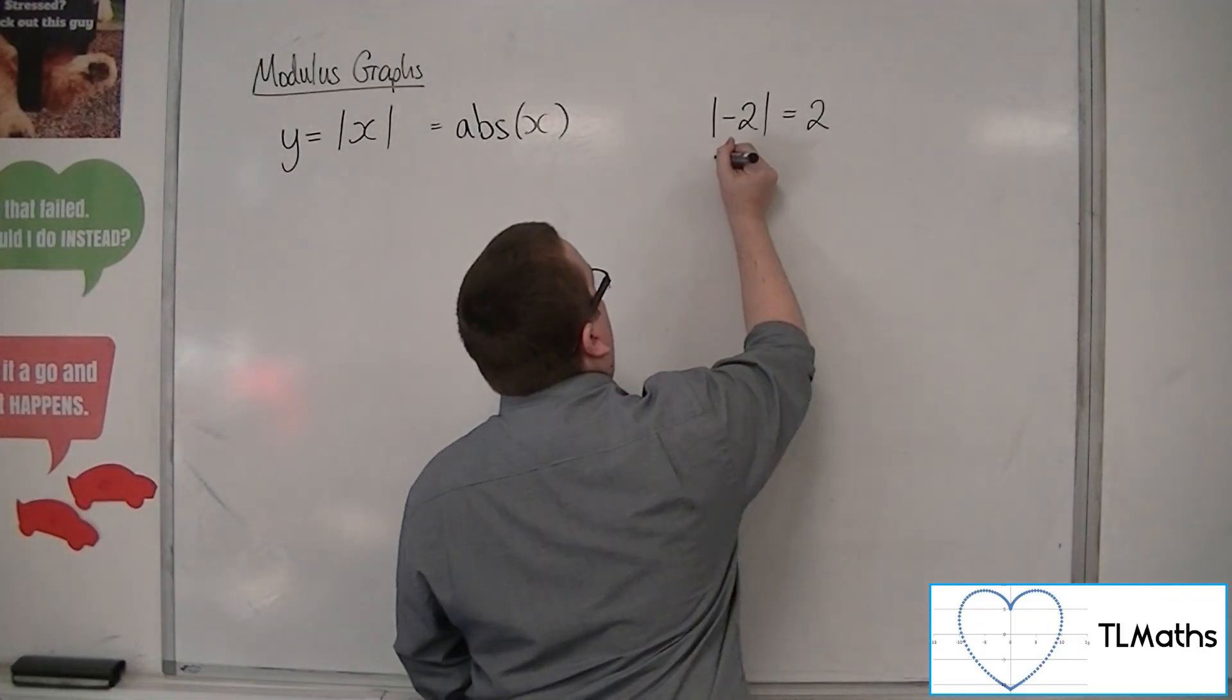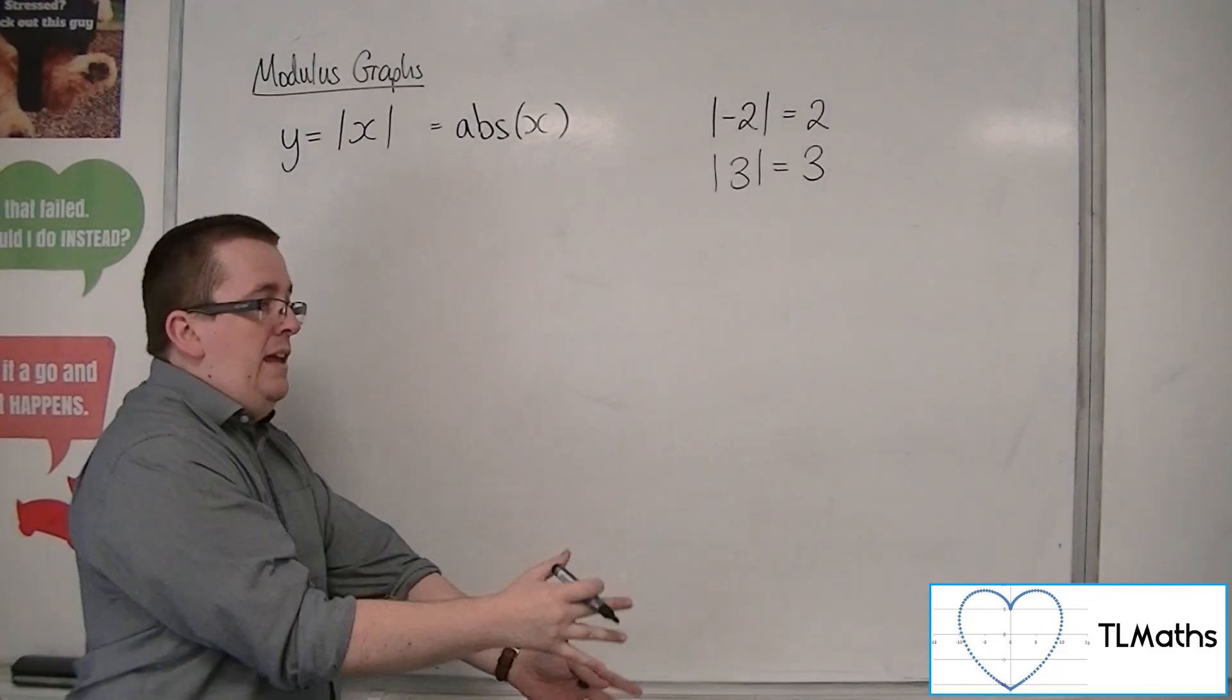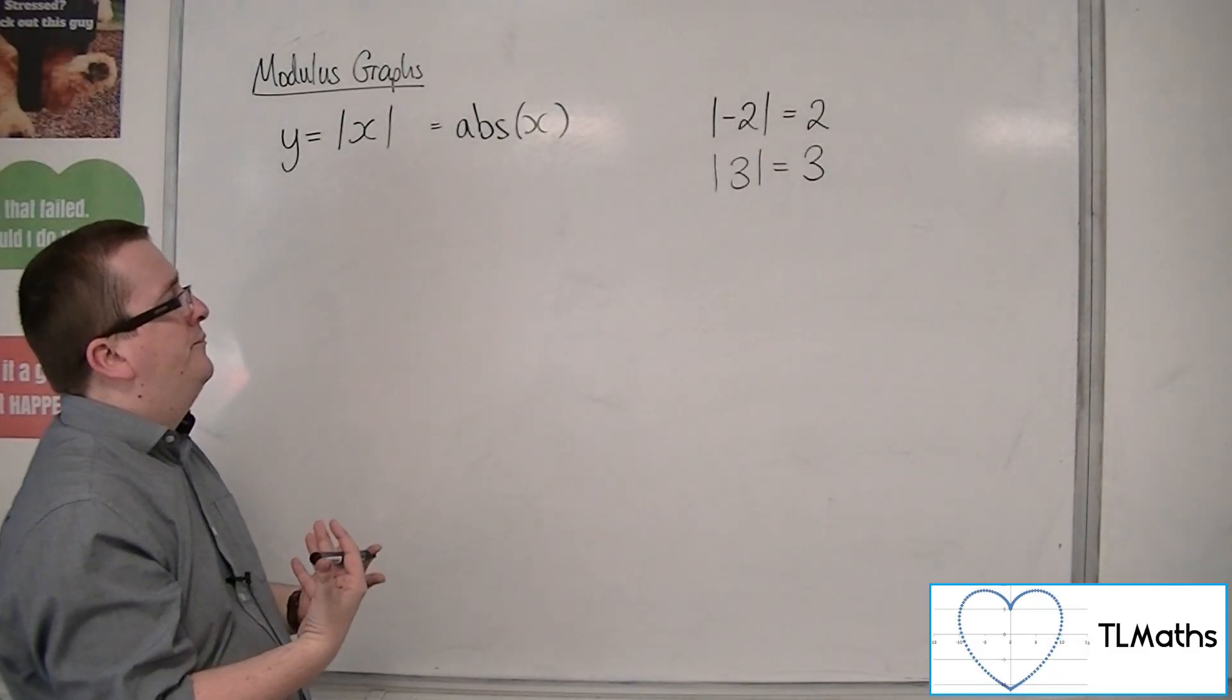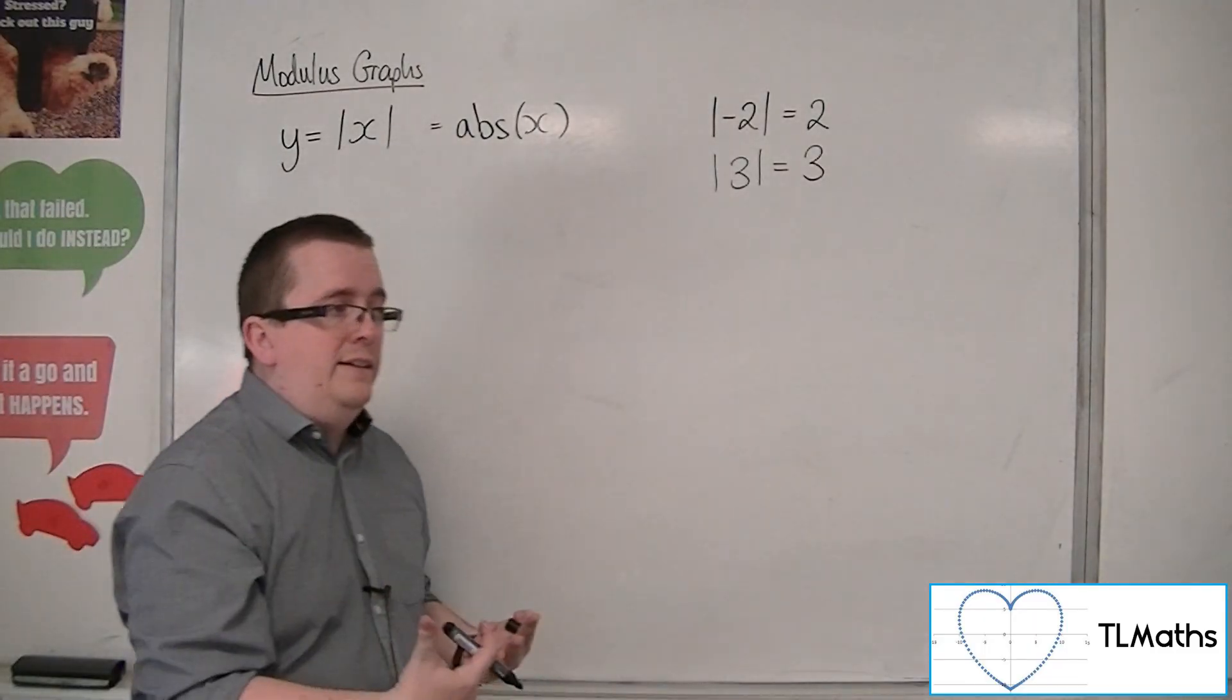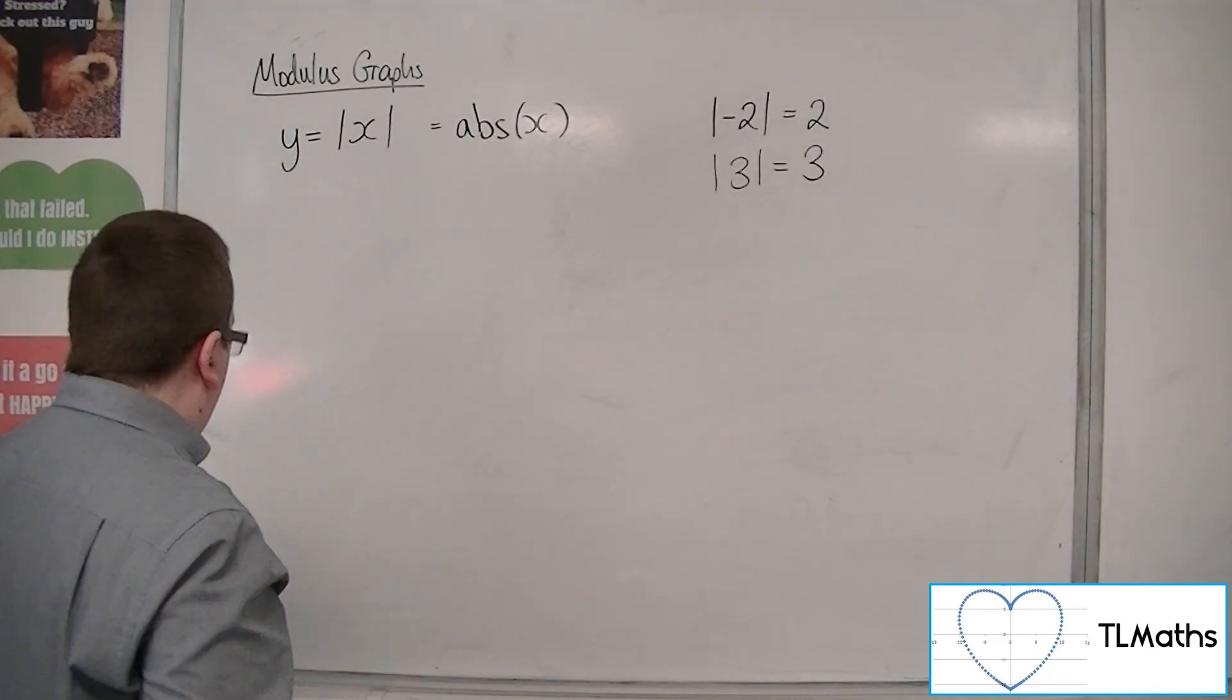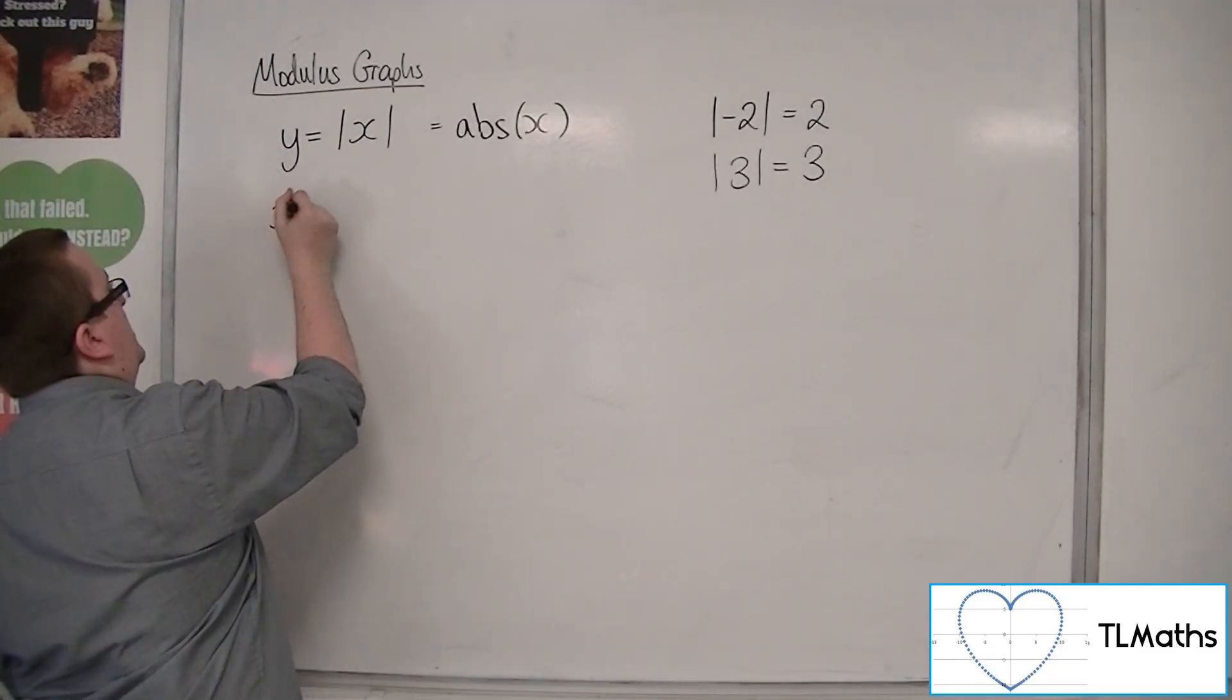So any positive number that goes in will also come out as positive. So any real number going through this process will come out as positive at the end, regardless of whether it started as positive or negative. So this has an effect upon the shape of the graph that is drawn. So if we're looking at y equals mod x, for example, then what we can do is we can just plot a few points just to see what's going on.